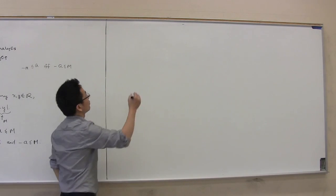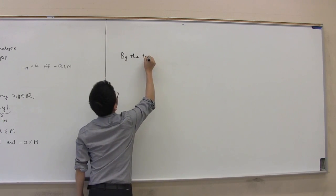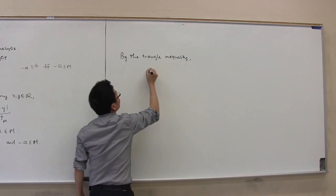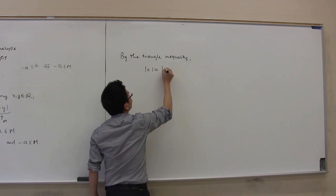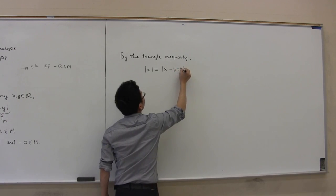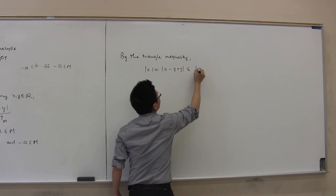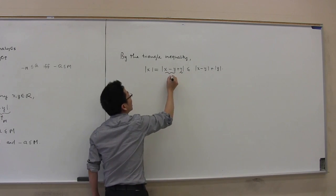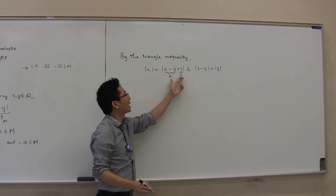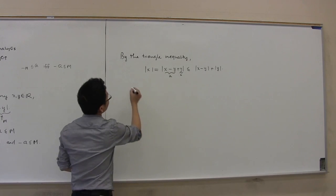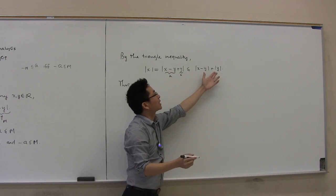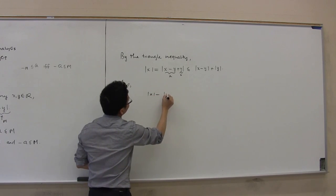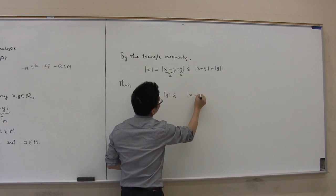By the triangle inequality, |x| = |( x - y) + y| ≤ |x - y| + |y|, where we apply the triangle inequality with a = (x - y) and b = y. Thus, subtracting |y| from both sides, we get |x| - |y| ≤ |x - y|.